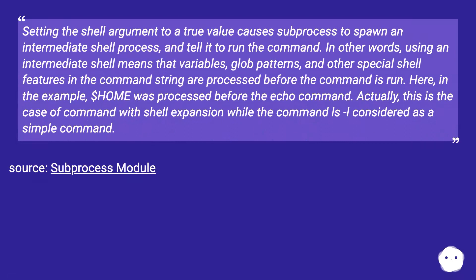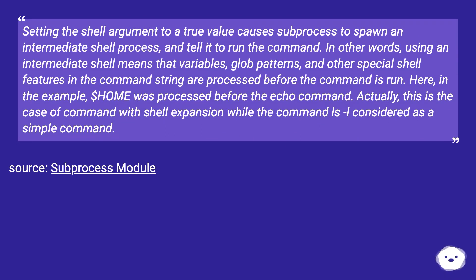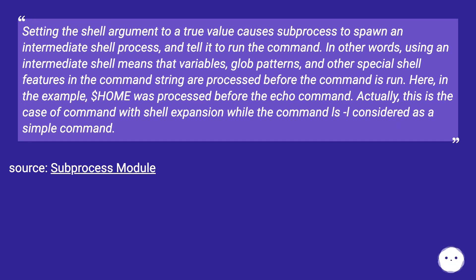Setting the shell argument to a true value causes subprocess to spawn an intermediate shell process and tell it to run the command. In other words, using an intermediate shell means that variables, glob patterns, and other special shell features in the command string are processed before the command is run. Here in the example, $HOME was processed before the echo command. This is the case of a command with shell expansion, while the command ls -l is considered a simple command.